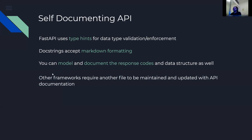Other frameworks such as Flask require a separate file to be maintained and updated with API documentation. If something is in two places, there's a 50% chance something is out of sync. Any time we can simplify the documentation maintenance process, it generally leads to the documentation being kept up to date.